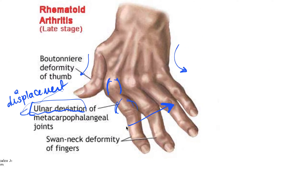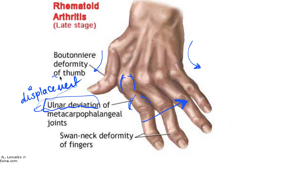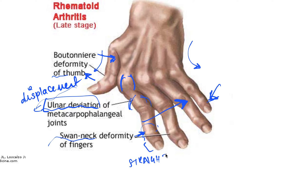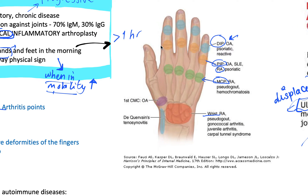The boutonniere deformity occurs typically in the thumb: the proximal joint flexes towards the palm, and the distal joint moves in the opposite direction, away from the palm. The swan neck deformity occurs in the phalangeal joints of the fingers: the proximal part of the finger is bent, but the ends of the fingers are completely straight. These deformities are easier to appreciate in real life on a patient, but they are key findings you will be asked about on the wards.